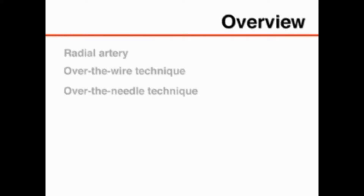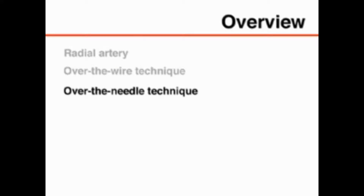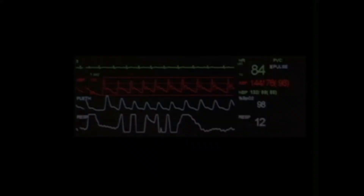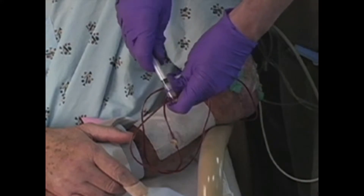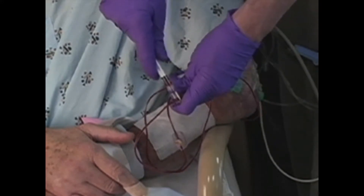This video will demonstrate arterial line placement in the radial artery using two of the many techniques available: an over-the-wire technique and an over-the-needle technique. Placement of an arterial line is indicated for continuous monitoring of arterial pressure and direct arterial blood sampling.